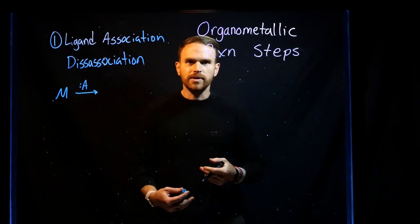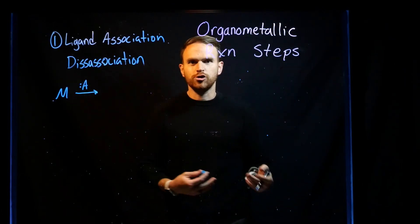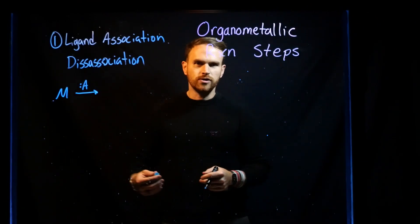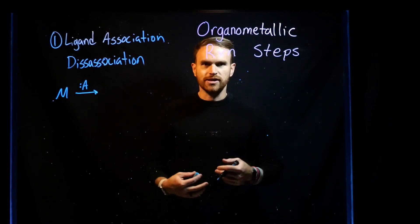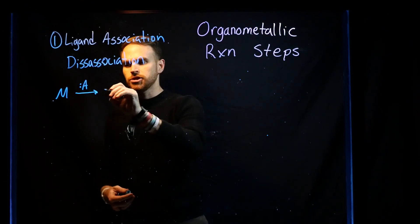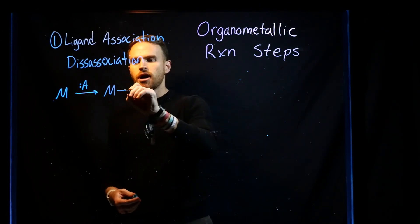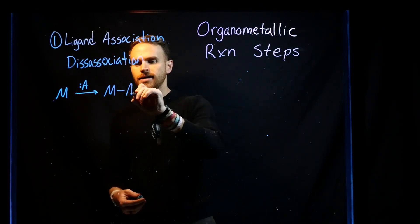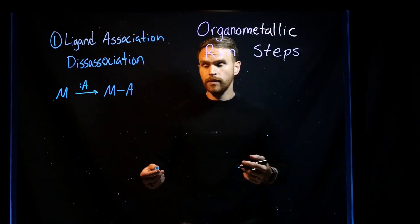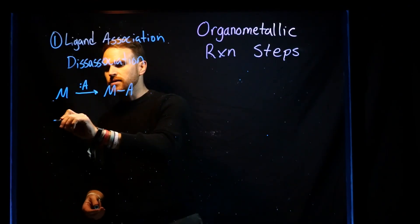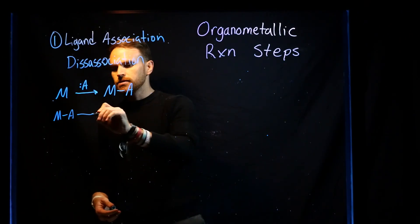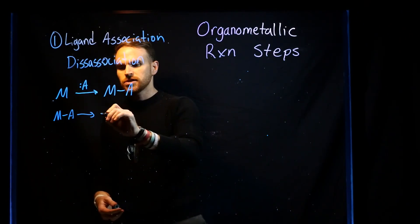A ligand is always going to be a Lewis base, meaning it's an electron donor, and typically your metal is going to be your Lewis acid, which is an electron acceptor. What happens in association is that the ligand comes on and creates a dative bond with the metal. Conversely, the opposite is dissociation, where a ligand just comes off.